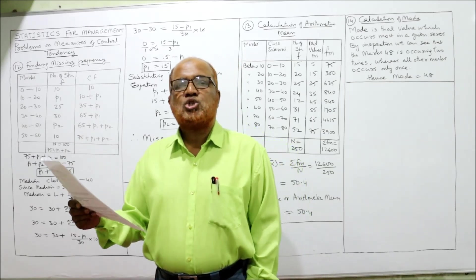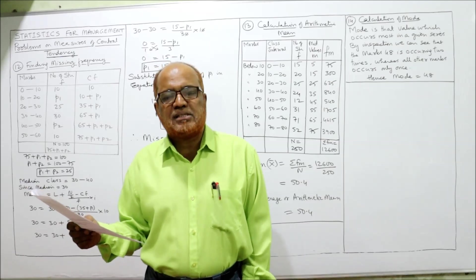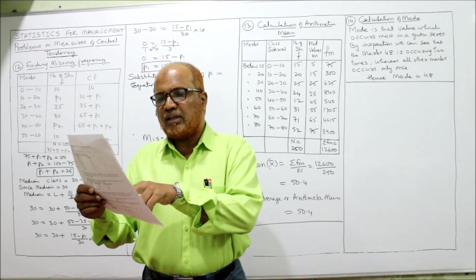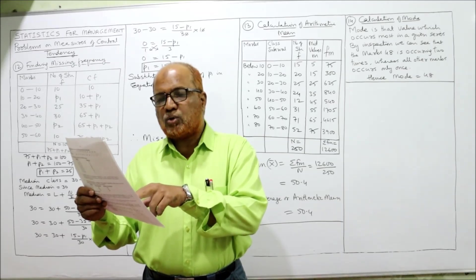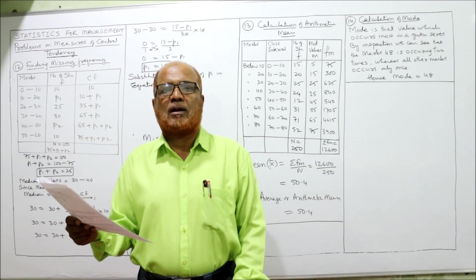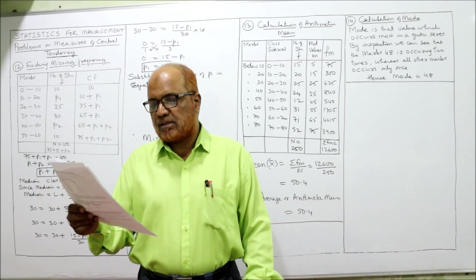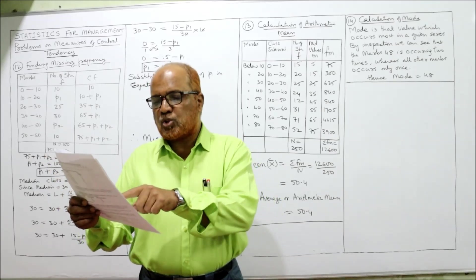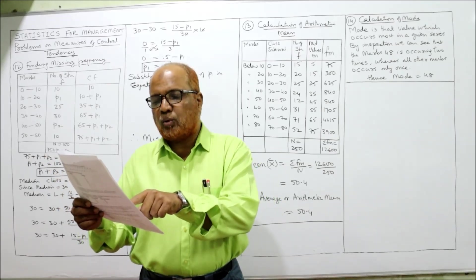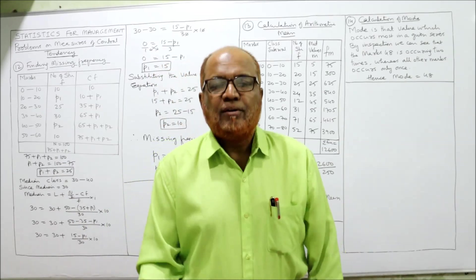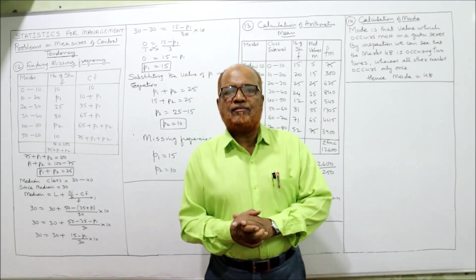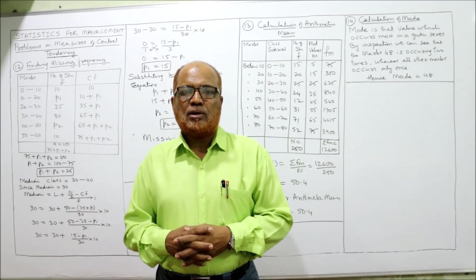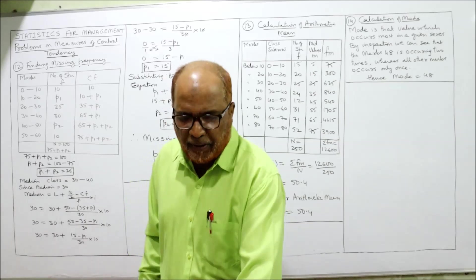The number of students: 0–10 has 10 students, 10–20 has a missing frequency (question mark), 20–30 has 25, 30–40 has 30, 40–50 has a missing frequency (question mark), and 50–60 has 10. So there are two missing frequencies — for 10–20 and 40–50.